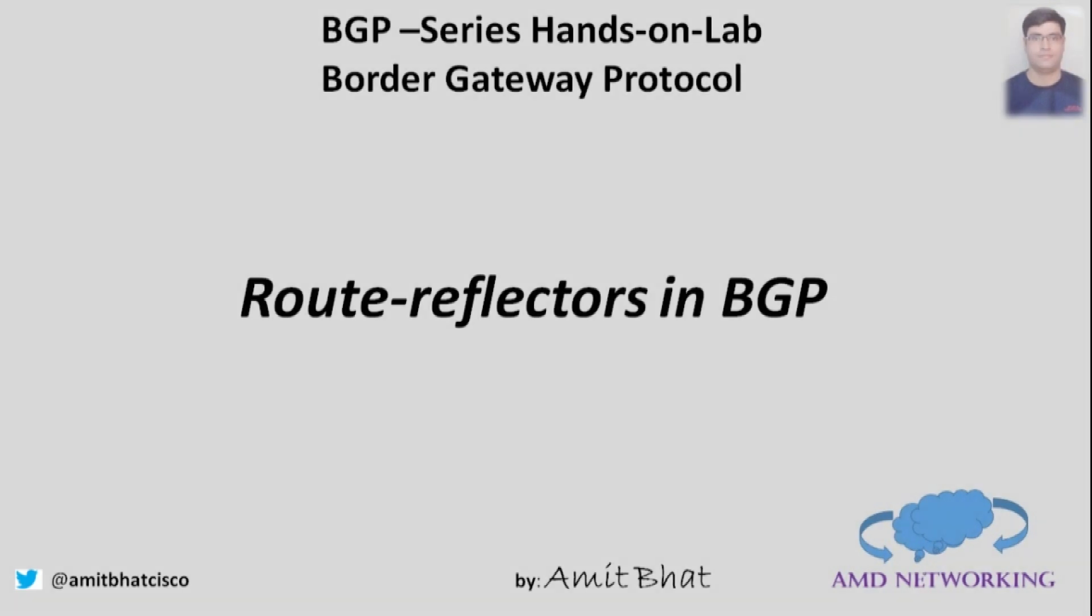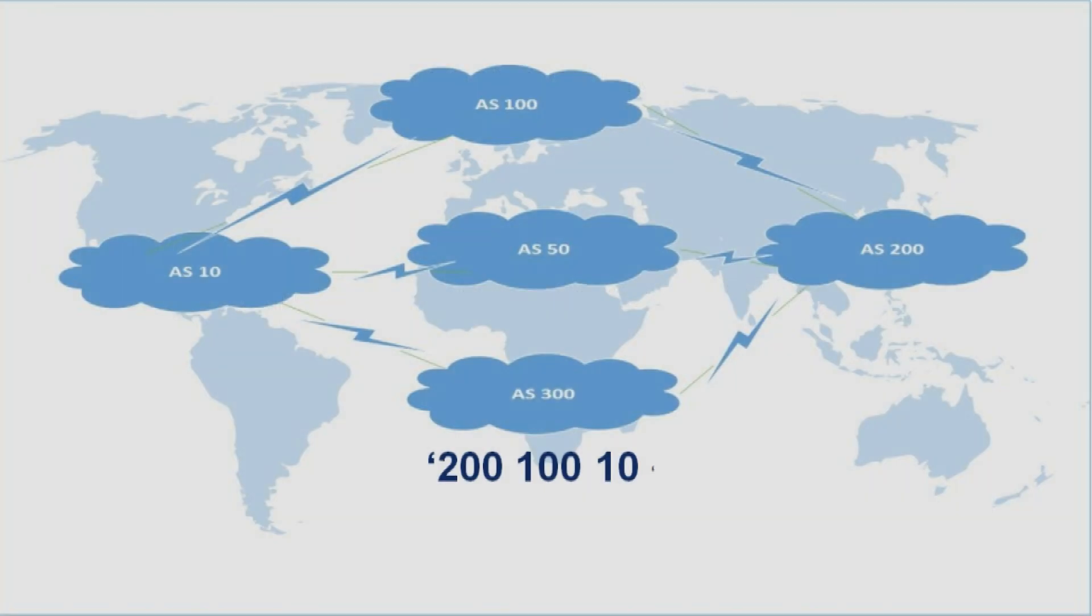Route reflectors in BGP. Here I will explain first split horizon rule in BGP and its behavior to avoid loops in BGP table. First, ISP of AS10 sends a network prefix to service provider of AS100 and injects into BGP table.